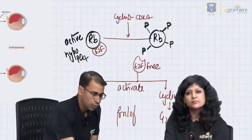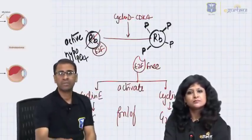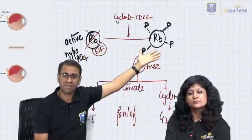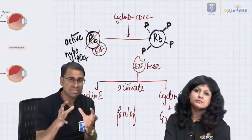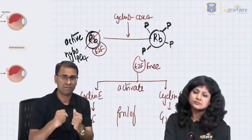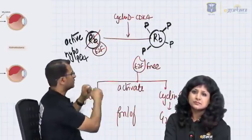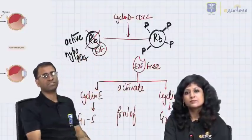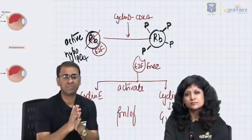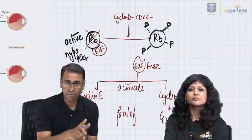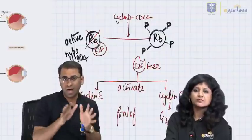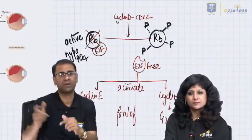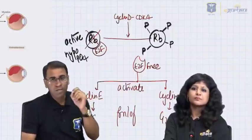If the RB gene is mutated, the governor is no longer there — the active form is no longer present. The RB gene is always in its inactive form. An inactive RB gene does not hold E2F, and E2F has full freedom to cause proliferation at G1/S and G2/M. So: RB in its active form withholds proliferation; RB in its inactive mutated form causes proliferation.